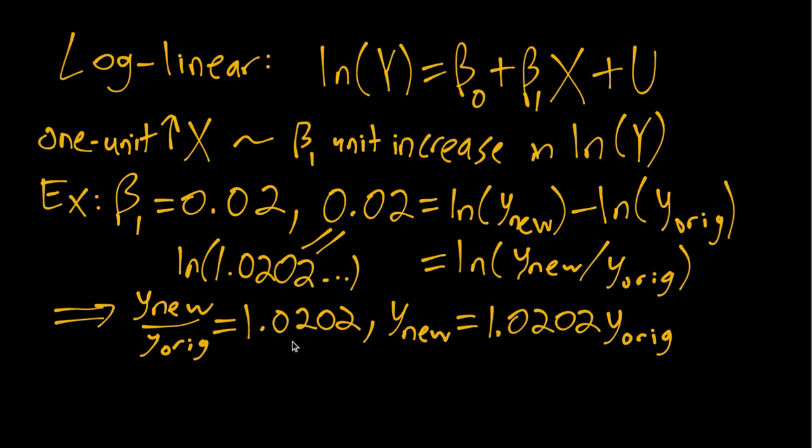Then beta_1 times x increases by 50 beta_1. That's now no longer very close to zero, so our approximation would not work very well. But we can still use the formula in the book to get the exact percentage increase in y associated with that particular increase in x.